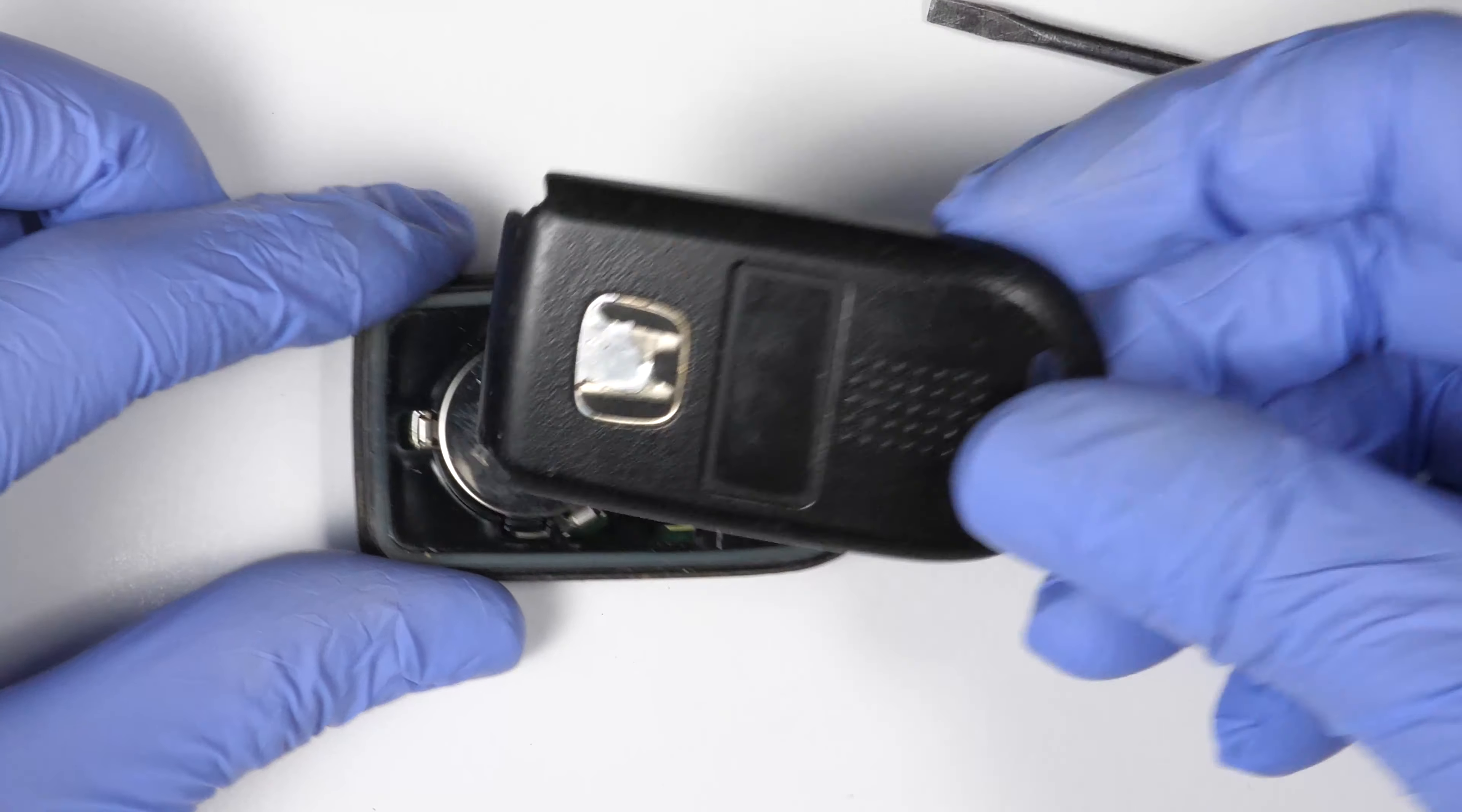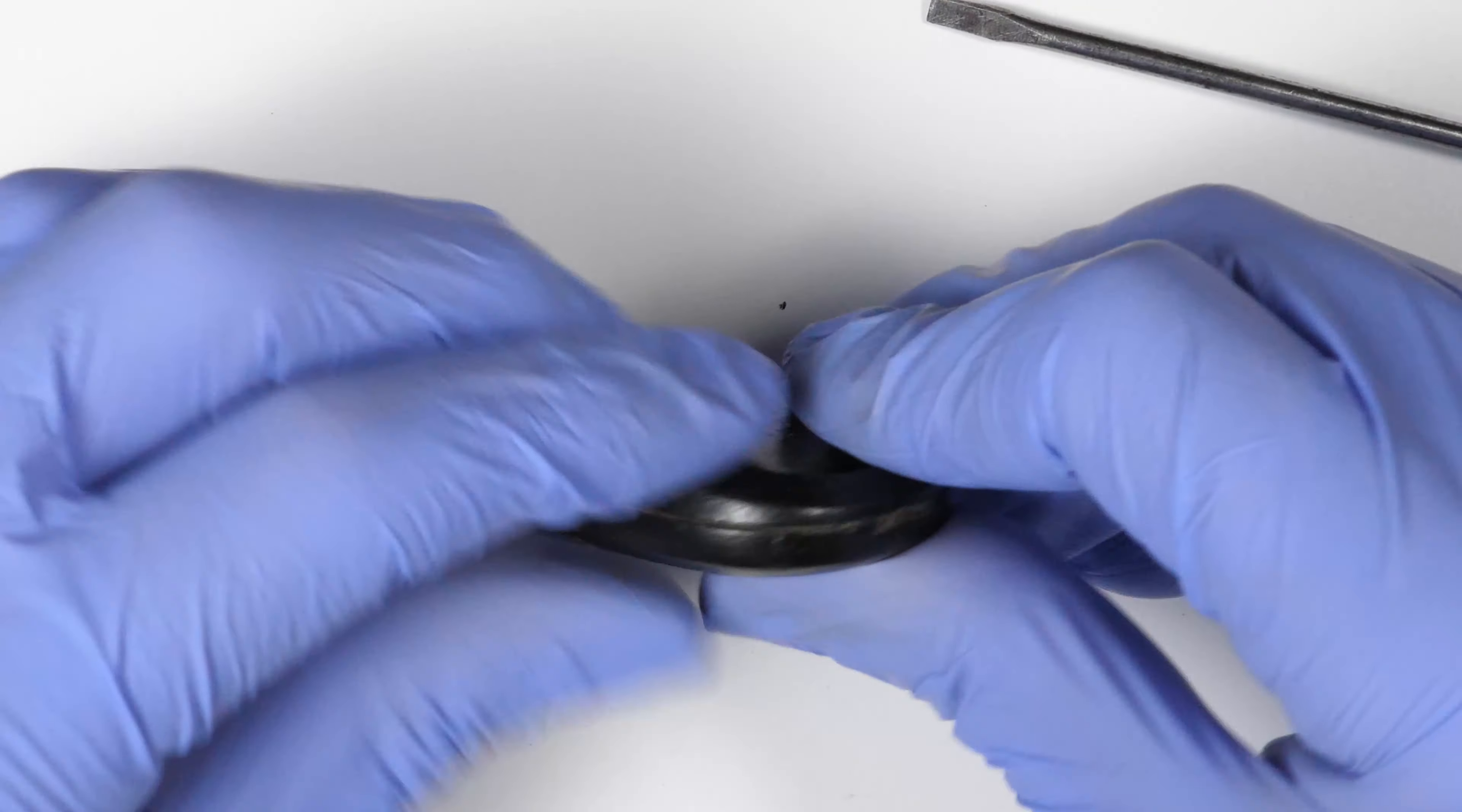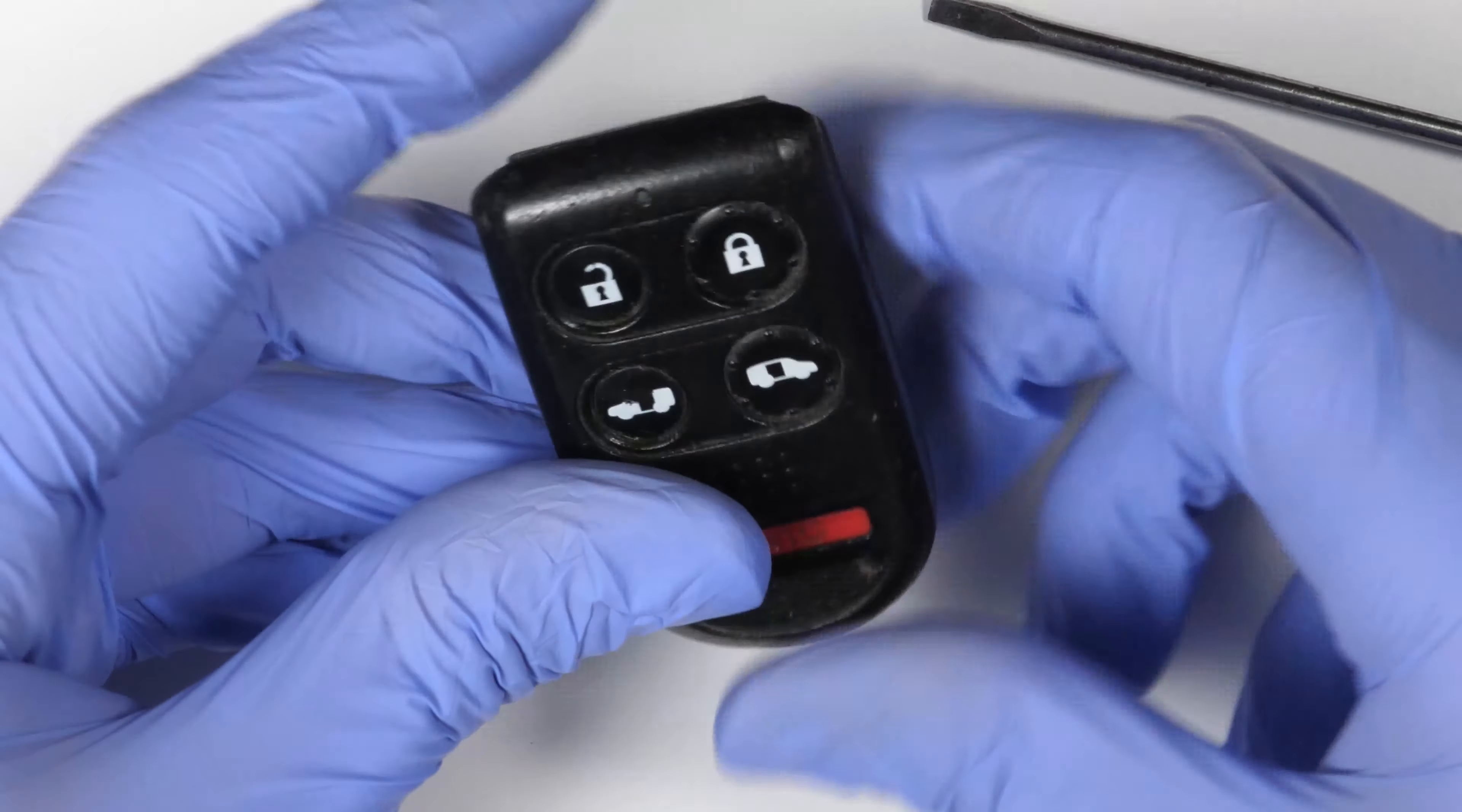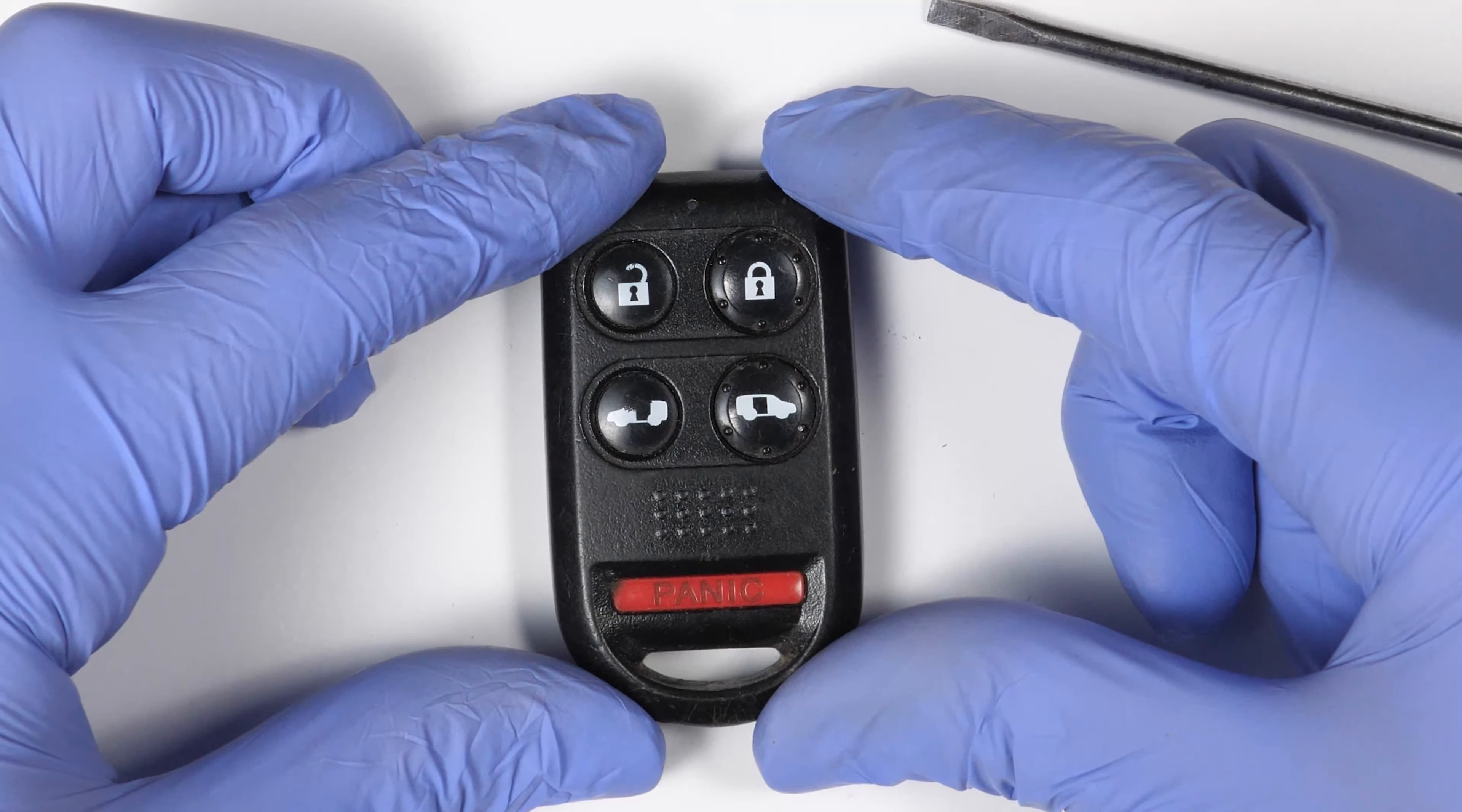Once you're done, take the other part of the casing and make sure all the sides are clipped so there's no water or debris that can enter inside. And you're done. Thanks for watching, and please subscribe if this video helped you.